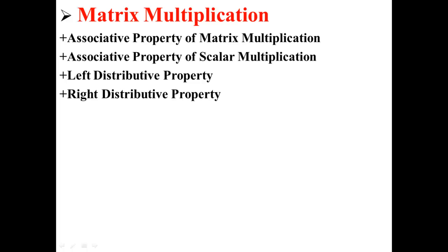In this lecture, I'm going to talk about a few of the properties of matrix multiplication. First, we have the associative property of matrix multiplication. Then we have the associative property of scalar multiplication. Then we have the left distributive property. And finally, we have the right distributive property.